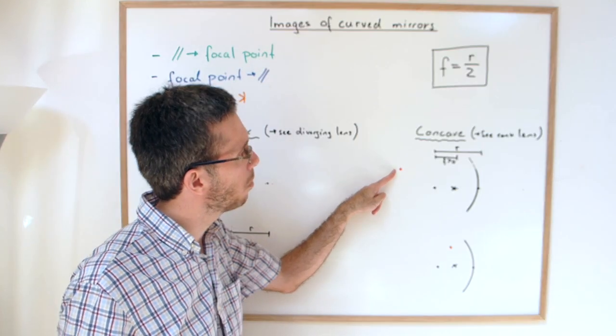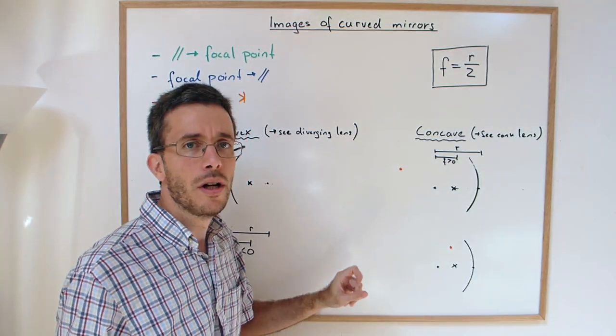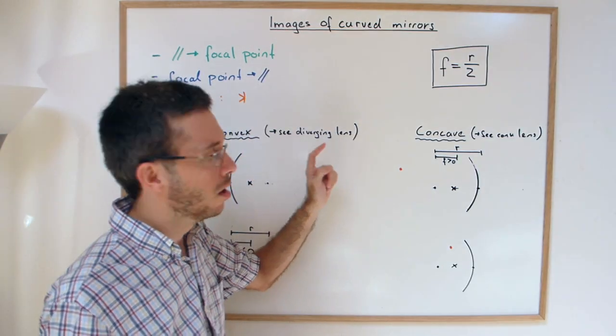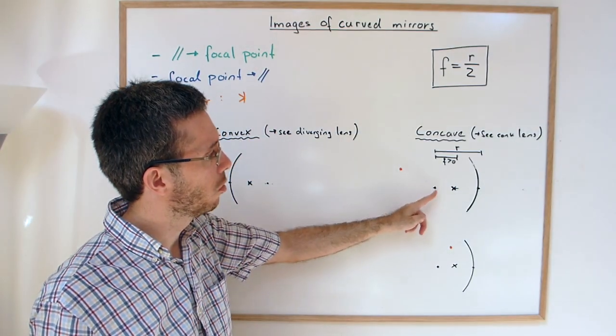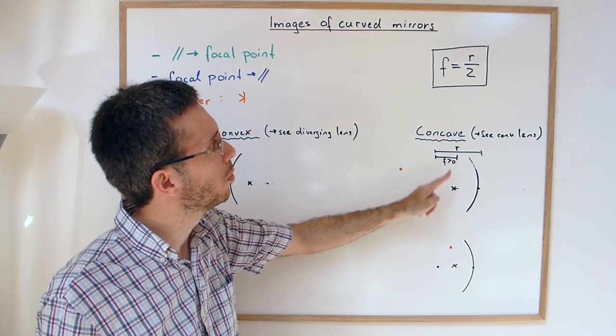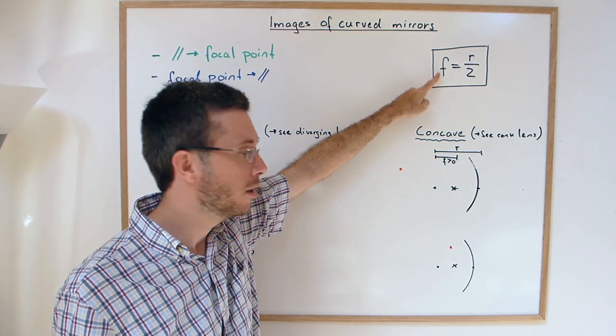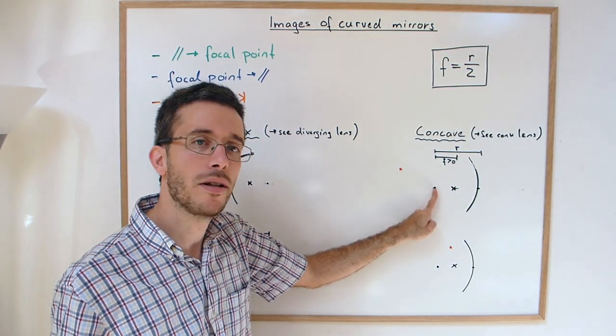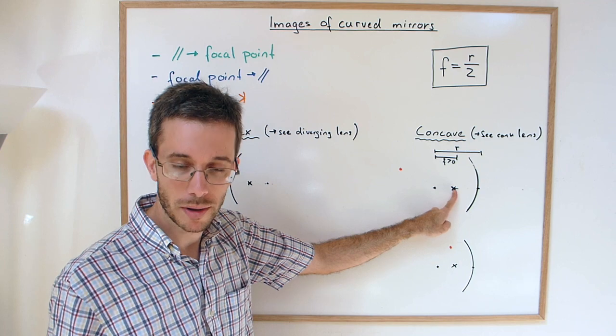To find the image of an object in a concave mirror, we're going to be using similar rules to the ones we used for lenses. The one thing that we have to know before is to find the focal point. The focal point is halfway between the radius and the mirror. So if this is the radius of the mirror, the focal point is here.